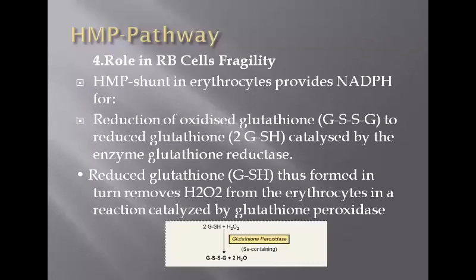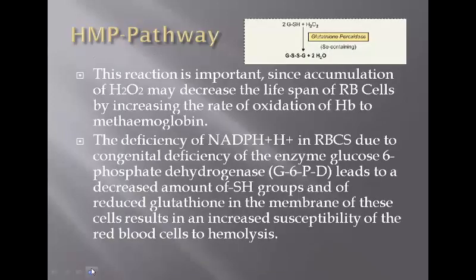The HMP pathway has great importance regarding erythrocyte fragility. The NADPH provided in erythrocytes is involved in the reduction of oxidized glutathione to form reduced glutathione, a reaction catalyzed by glutathione reductase enzyme. This reduced form of glutathione is involved in the removal of peroxides from erythrocytes in the presence of the enzyme glutathione peroxidase, which is selenium-containing. Water molecules are removed, and oxidation of glutathione occurs again.